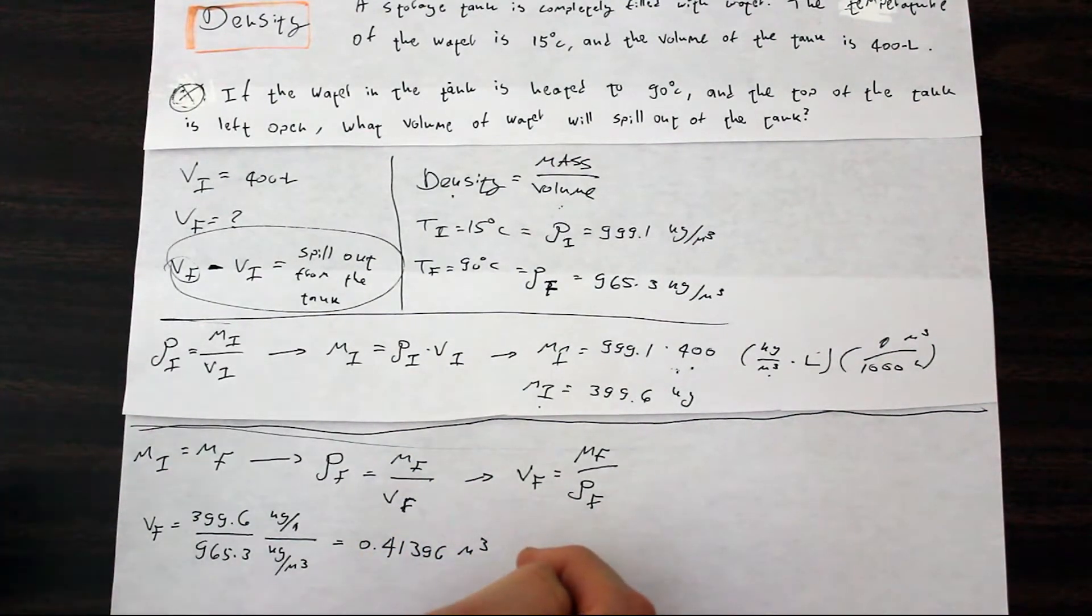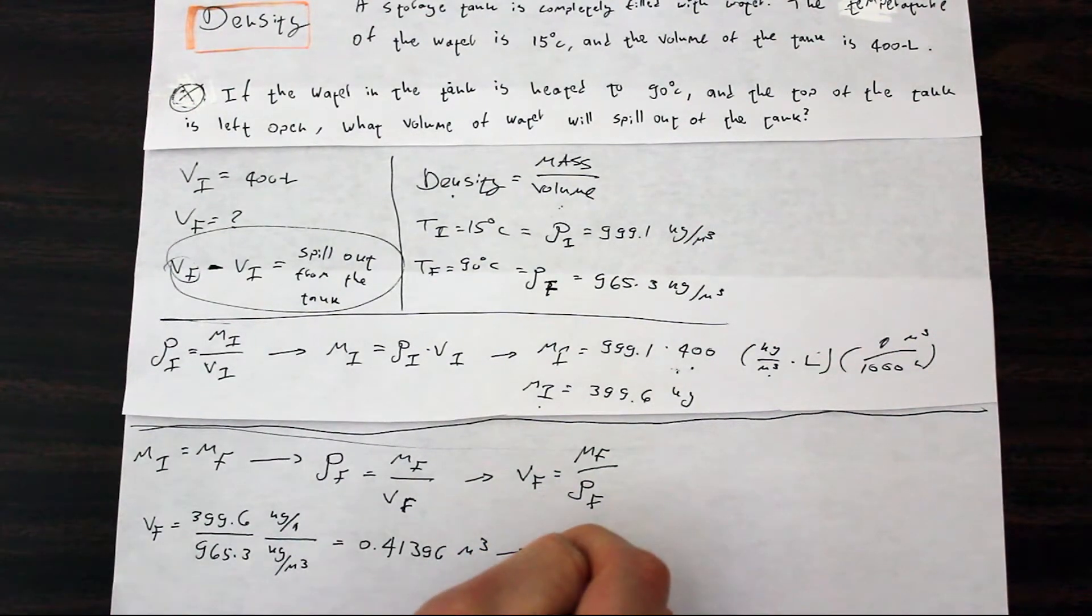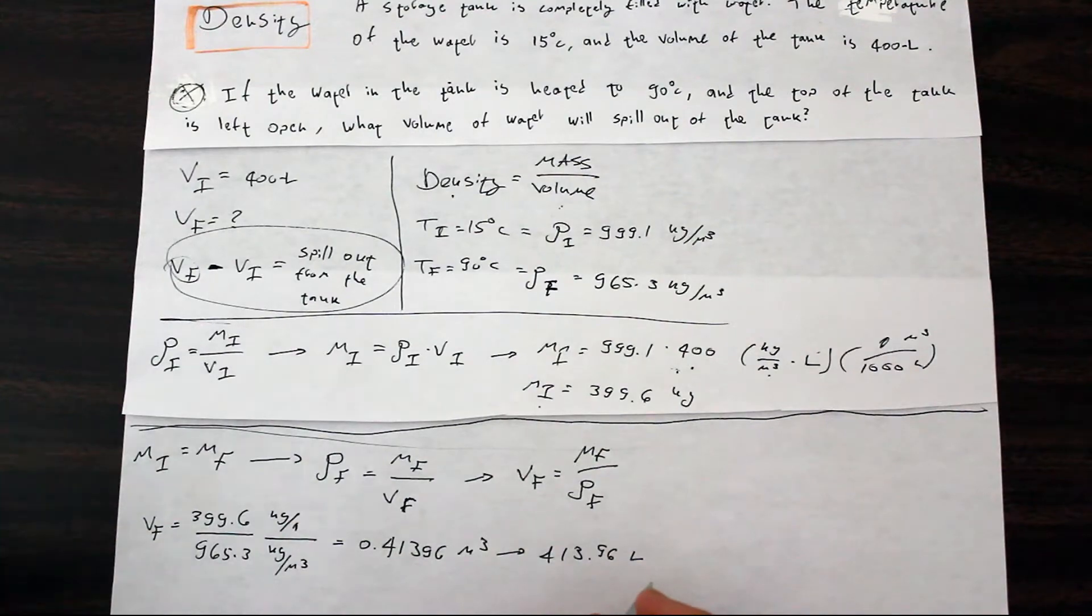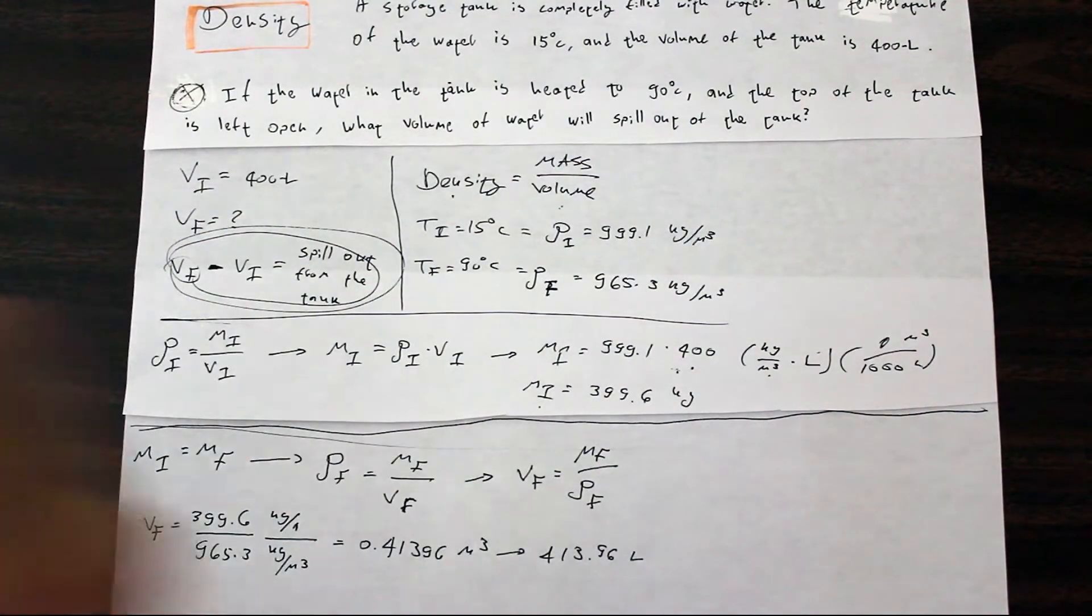Don't forget that now we need to convert back into liters. So, we simply multiply by 1,000 and we get 413.96 liters, which we can roughly say is 414.